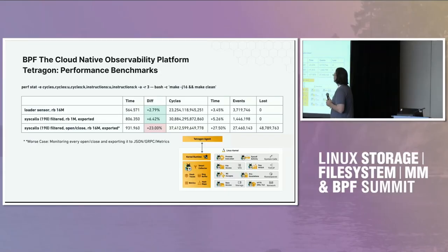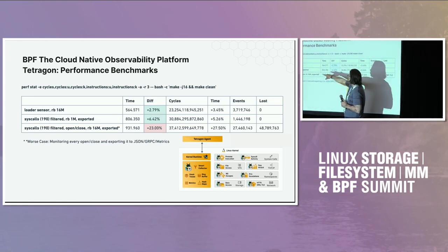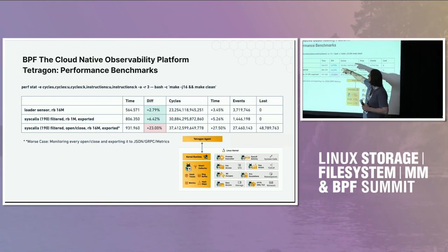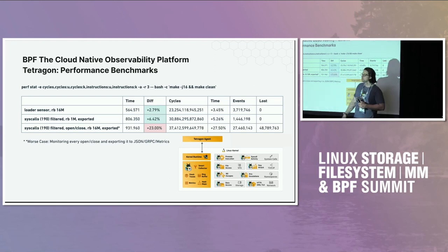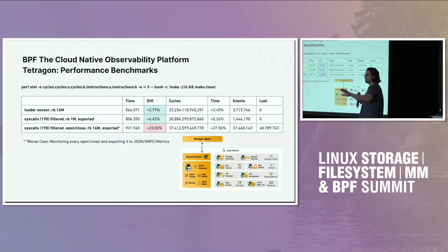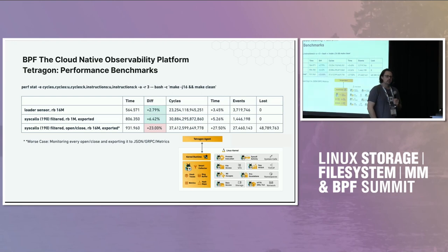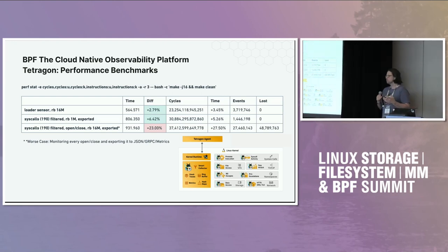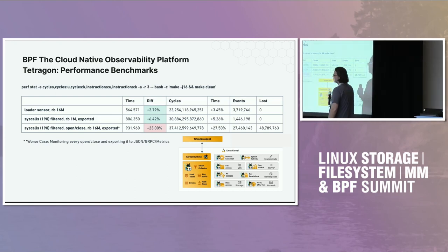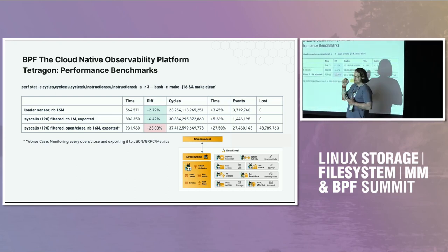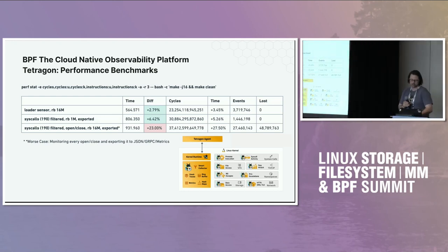Here's a benchmark showing the base overhead when watching execs and library loads — it's quite small on a kernel test, running perf with j16 on a kernel build. If we're monitoring all syscalls it's a little higher but not terrible, with a filter. Without filtering, monitoring every syscall in the system, you hit the ring buffer over and over again and it gets expensive. The key lesson: you really need to start filtering in the kernel.